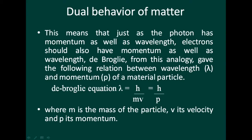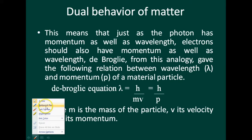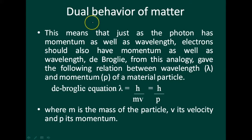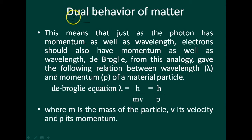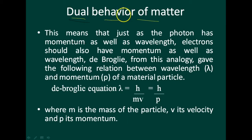Coming to the next topic, that is dual behavior of matter. Dual behavior of matter means the matter which exhibits dual characters - which shows particle-type properties and wave-like properties both. That is called dual behavior of matter.